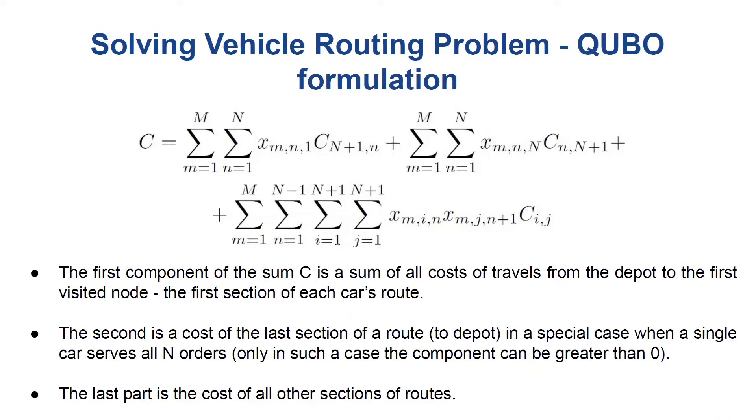Finally, we can start going to our QUBO formulation. Let's define the function C, which is a cost of a given VRP solution, so for a given assignment of variables X. It seems to be complex, but just to give you an intuition. The first component of C is a sum of all costs of travels from the depot to the first visited node, which is the first section of each vehicle's route.